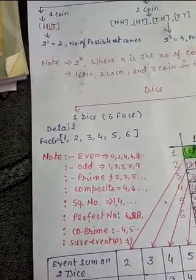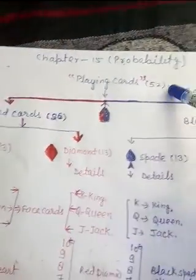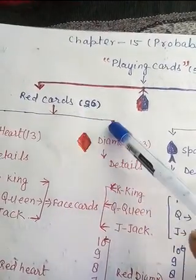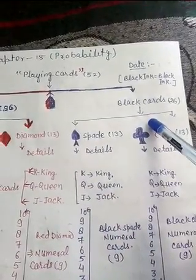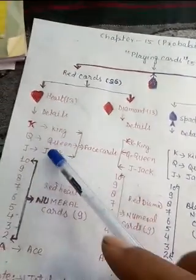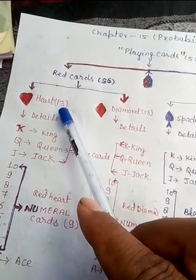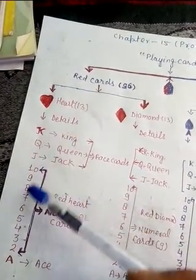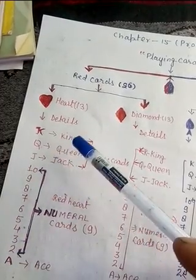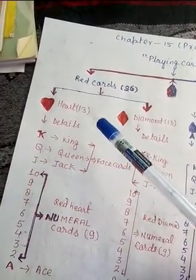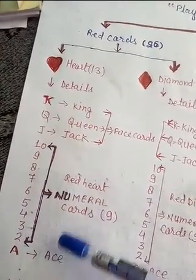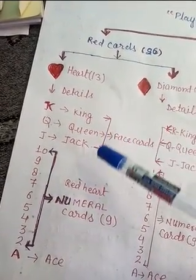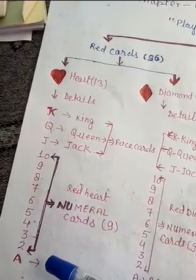These are the few basic points about probability. Now, in the case of playing cards, there are 26 red cards and 26 black cards. The details of hearts: there are 13 cards total. There are 4 alphabet cards and 3 face cards in hearts, and 9 numeral cards.